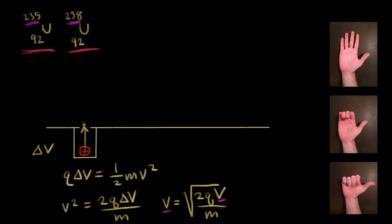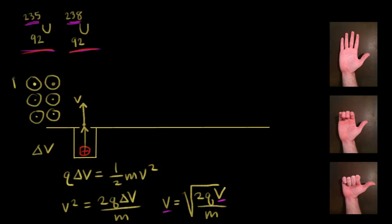When the ion enters this portion of the mass spectrometer, it's moving in this direction with velocity v. This region of the mass spectrometer has a uniform magnetic field pointing directly out of the page — represented by a dot, like the tip of an arrow pointing at you. In physics, we represent magnetic field with B. The moving ion is going to experience a magnetic force equal to Q times V cross B, where Q is the charge, V is the velocity, and B is the magnetic field.